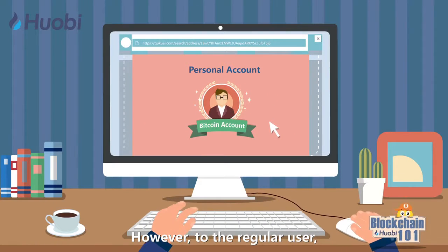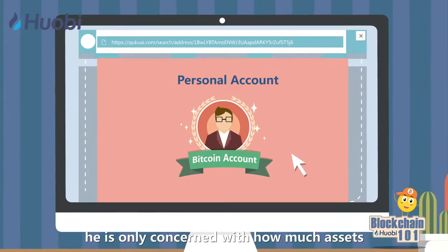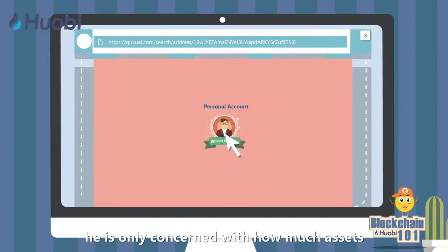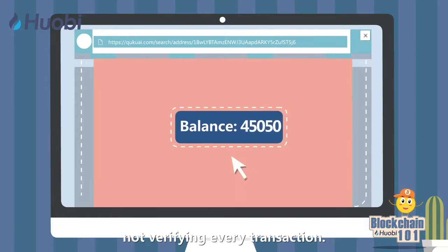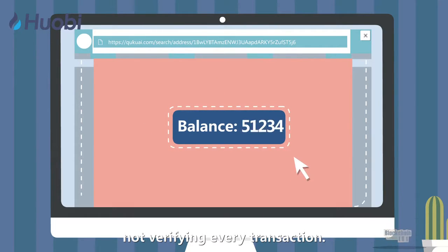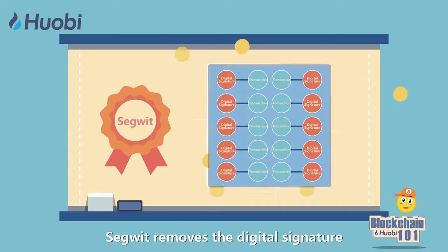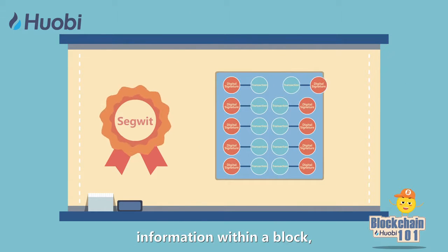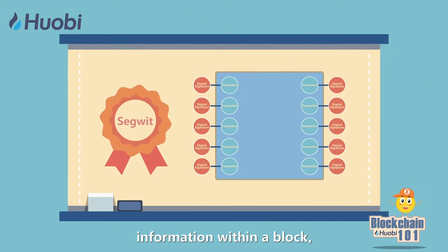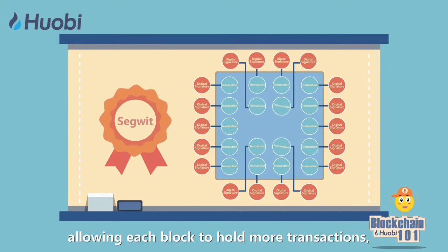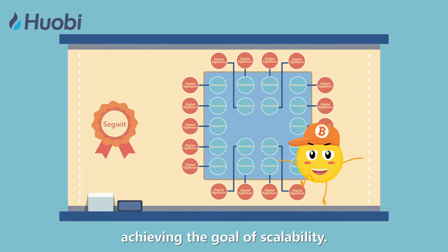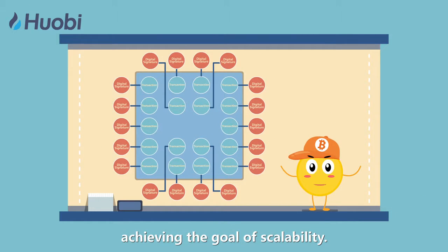However, to the regular user, he is only concerned with how much assets he has in his accounts, not verifying every transaction. SegWit removes the digital signature information within the block, allowing each block to hold more transactions, achieving the goal of scalability.